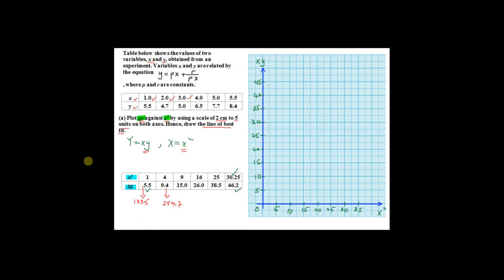Now plot all 6 points on the graph. The first point is (1, 5.5), the second is (4, 9.4), the third is (9, 15), and so on. The last point should be (30.25, 46.2).